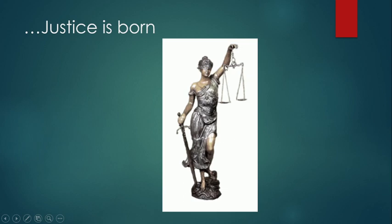The symbol of justice is a figure holding scales, weighing the evidence with a blindfold around her eyes — because justice is not a respecter of persons, she just weighs the evidence. And she's got a sword. The sword can either cut the binds that bind the prisoner or put the prisoner to death. Interesting, huh? What's it got to do with families?